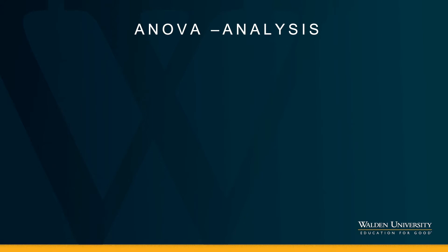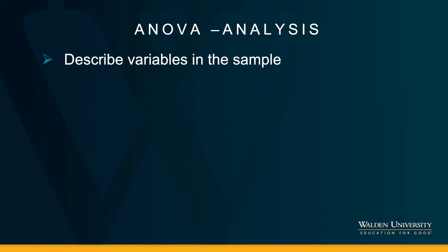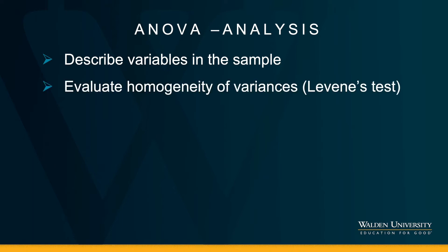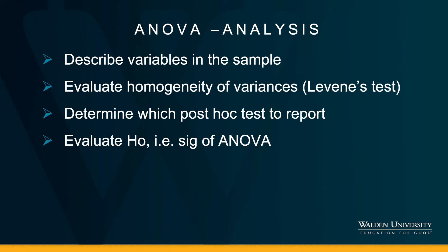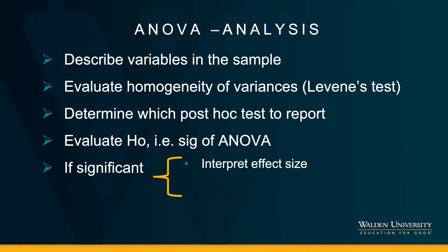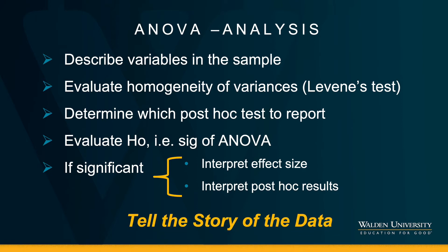Before we move to SPSS to run a quick example of the ANOVA, I will show you what we will interpret in the analysis. Once we generate the results, we will describe the sample variables, evaluate Levene's to assess homogeneity of variances, which we will then use to determine which post-hoc test to report. We will first evaluate the null hypothesis at model level to learn if the ANOVA test was significant, and if it is significant, we will interpret the effect size and the post-hoc results with great detail, including how to interpret the means and social change.